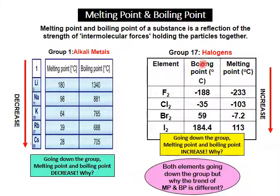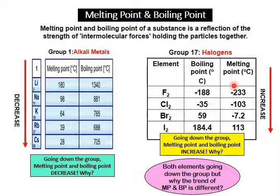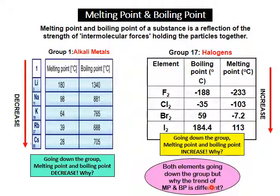But for group 17 halogen, when going down the group, the value of the boiling point and melting point increase. Both groups go down the group, but why is the trend different?